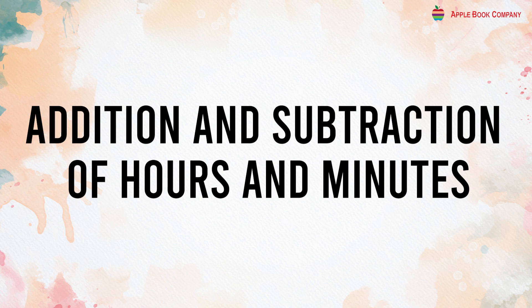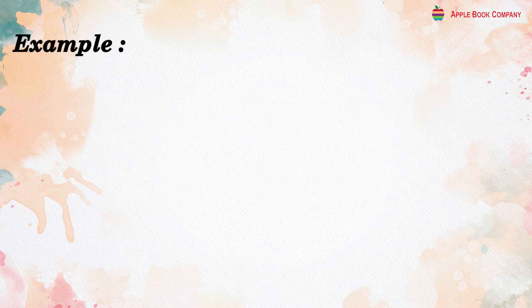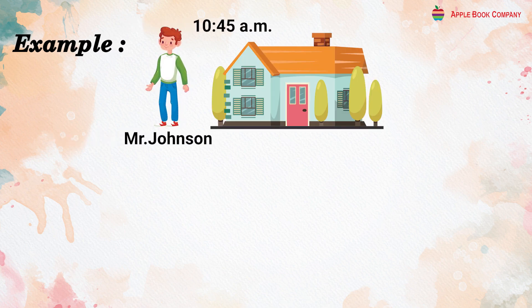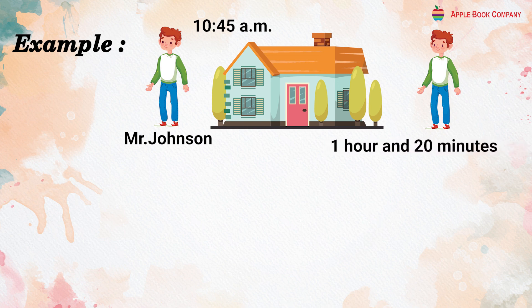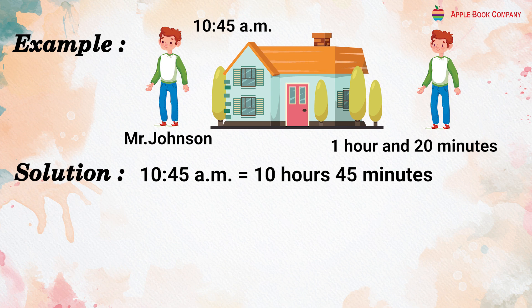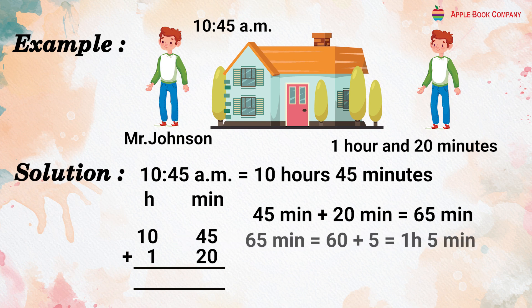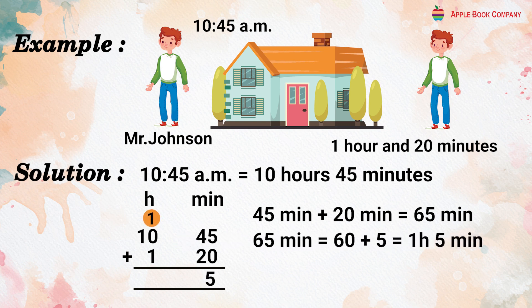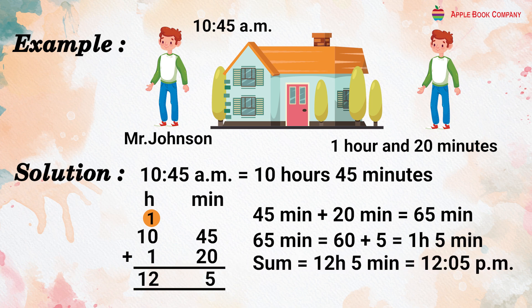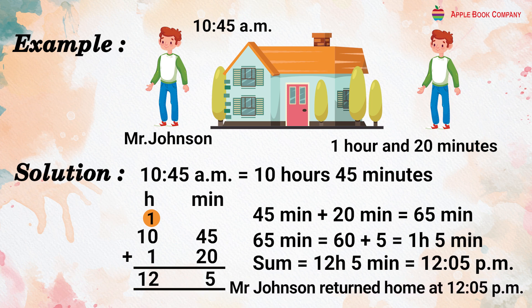Addition and subtraction of hours and minutes. Example: Mr. Johnson left home at 10:45 AM and returned after 1 hour and 20 minutes. At what time did he return? Solution: 10:45 AM = 10 hours 45 minutes. Adding 1 hour 20 minutes: 45 + 20 = 65 minutes = 1 hour 5 minutes. Carry 1 hour: 10 + 1 + 1 = 12 hours 5 minutes = 12:05 PM. So Mr. Johnson returned home at 12:05 PM.